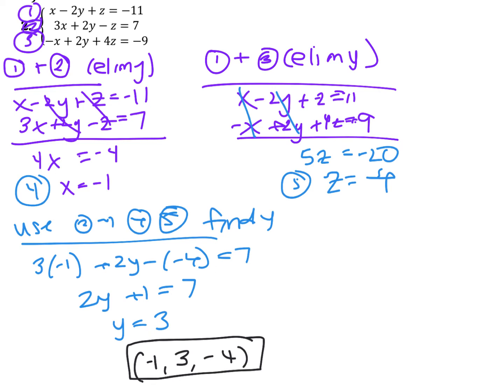Before we wrap up, there are special cases. We said visually it's possible there's no solution and possible there are infinitely many solutions. I want to work through what those look like from the equation side. We're going to do four more examples — two with no solution and two with infinitely many solutions.